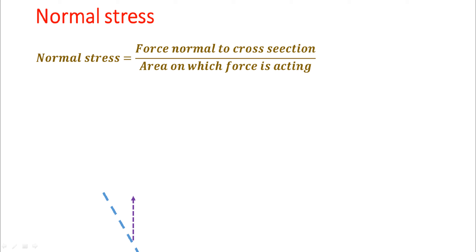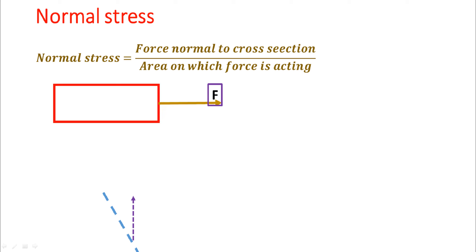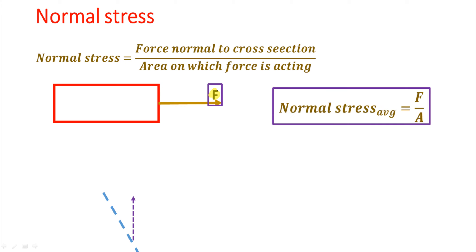One point to understand is that it is the area on which the force is acting. Let's take a very basic example: assume a rectangular box of unit thickness. For the simplest case, assume that the force is acting perpendicular to the area. The normal stress will be F divided by A. Here the force is F and the area is the area of the rectangle. So the average normal stress equals F divided by A.